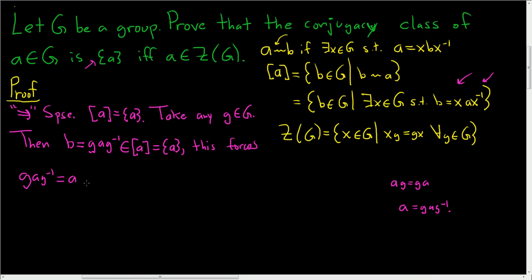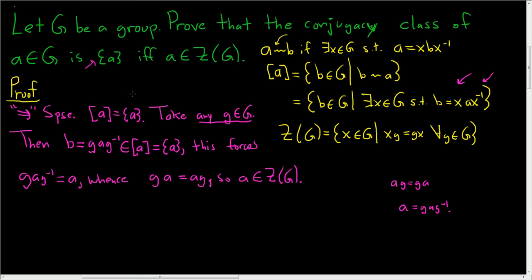And then, multiplying on the right by g — whence — g A is equal to A g. So we took any little g in capital G and we showed that g A is equal to A g. And so this shows that A commutes with every element of G, so A is indeed a member of the center of G. So we showed that if the conjugacy class of A is the singleton, then A is in the center of G.